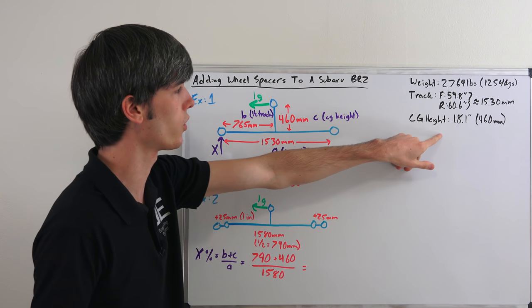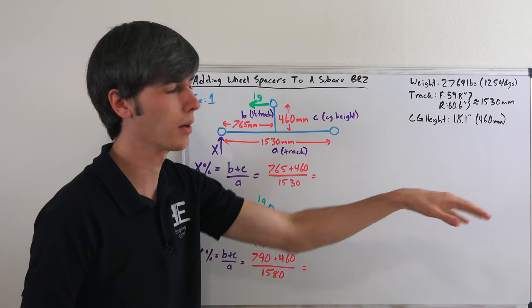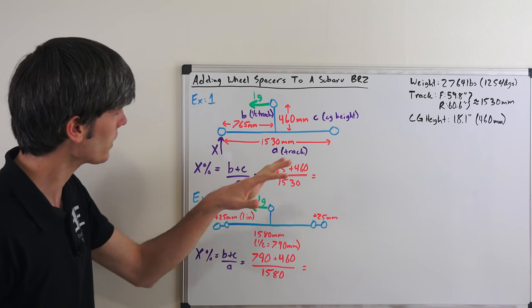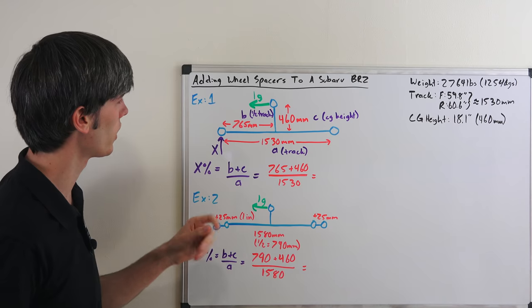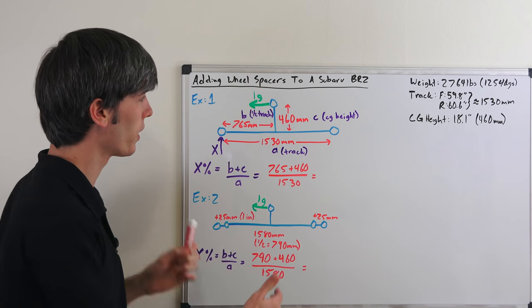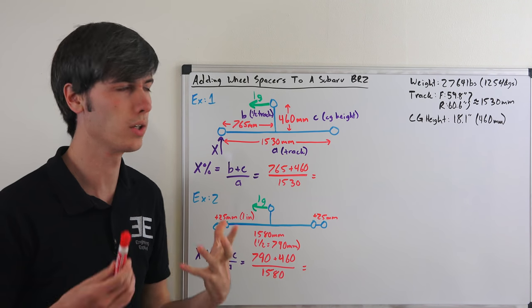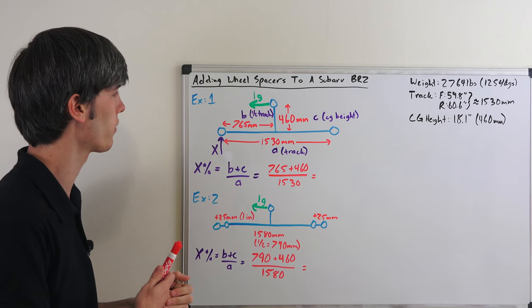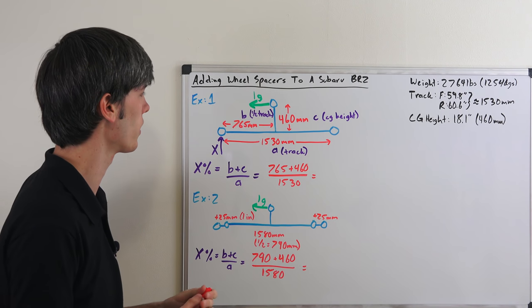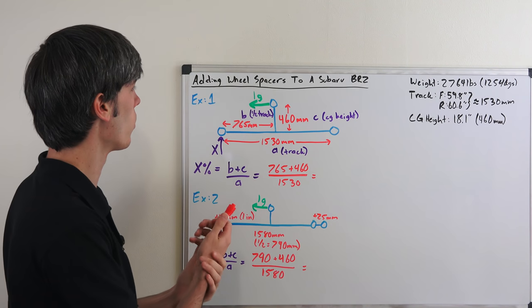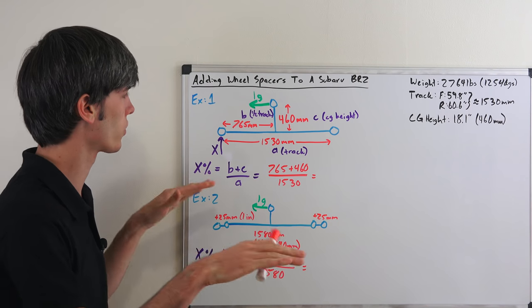Now this is a pretty low CG, so cars with higher CGs will see a more dramatic effect. Now looking at this first example, what we have is a Subaru BRZ going around a corner at 1G—1G lateral grip. So that is pretty significant. That's pretty much going to be best case scenario that it can hit, you know, 1G cornering on just a flat surface.